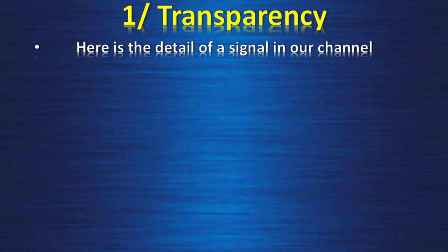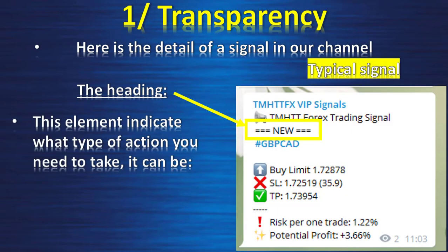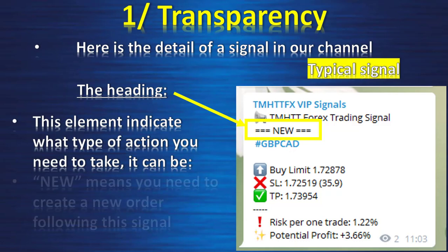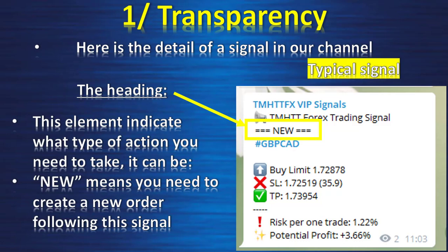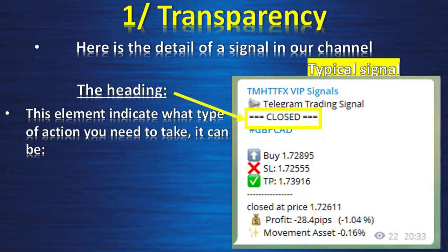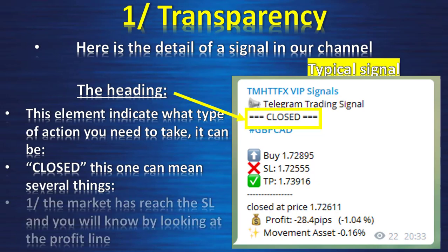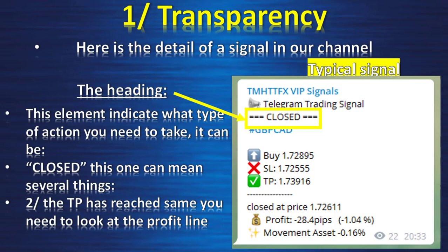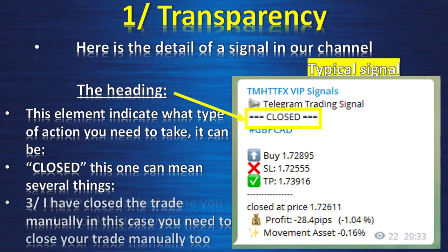Here is the detail of a signal in our channel. The heading indicates what type of action you need to take. 'New' means you need to create a new order following the values of the signal. 'Activated' means there was a pending order and the entry point has been reached — the trade is now open. 'Closed' can mean several things: the market reached the stop loss, the target profit was reached, or I closed the trade manually — in which case you need to close your trade manually too. You check the profit line to understand what happened.